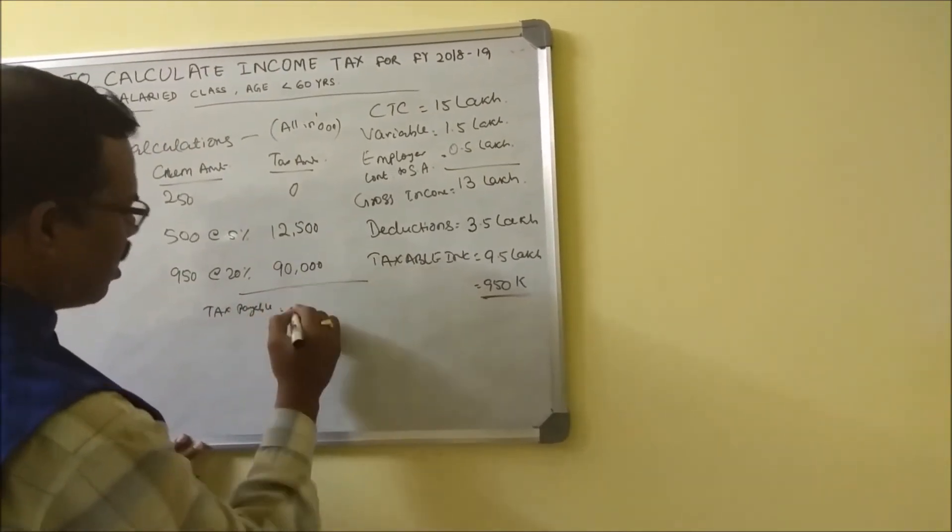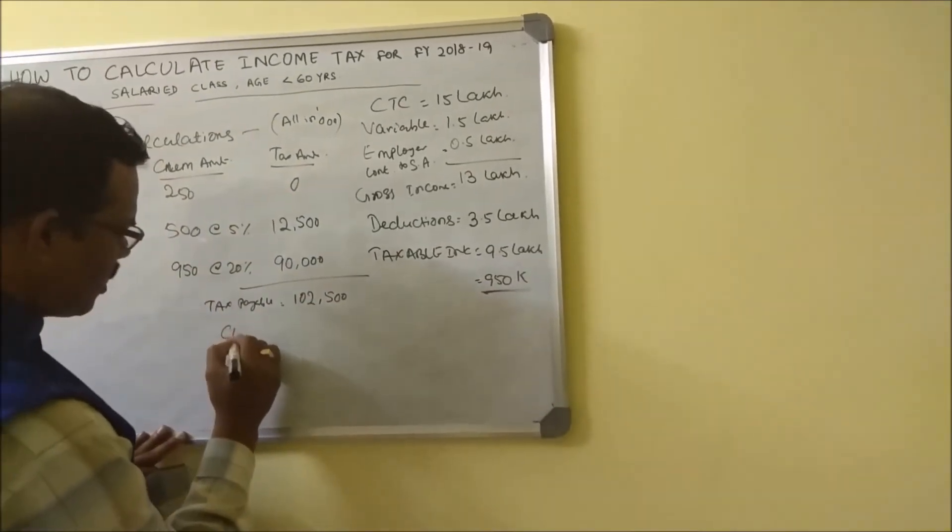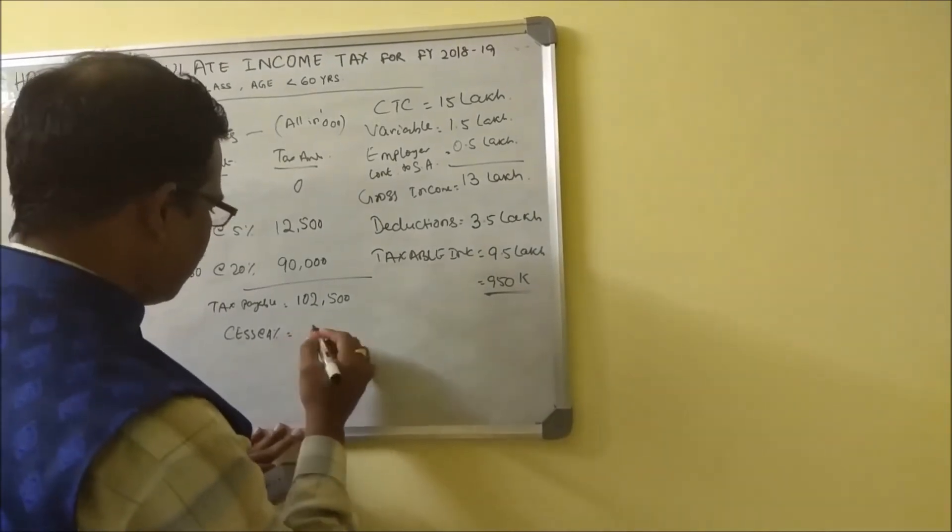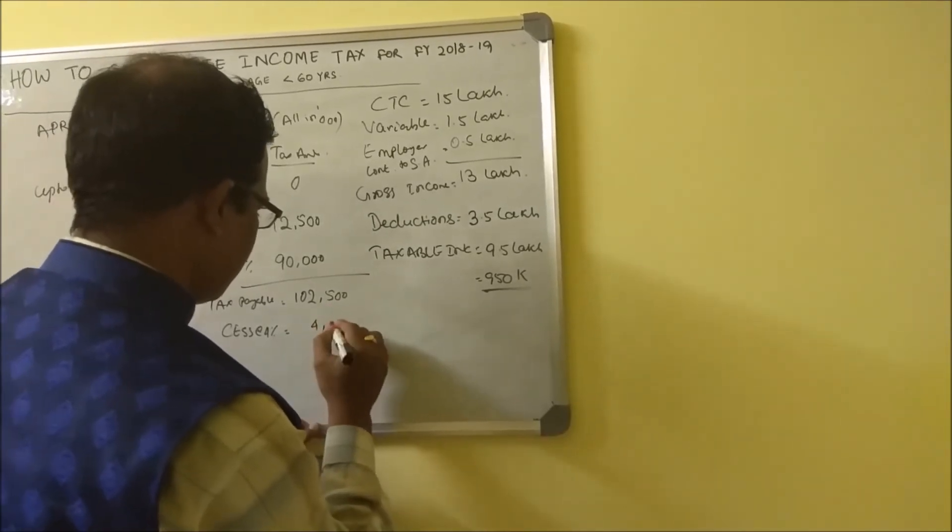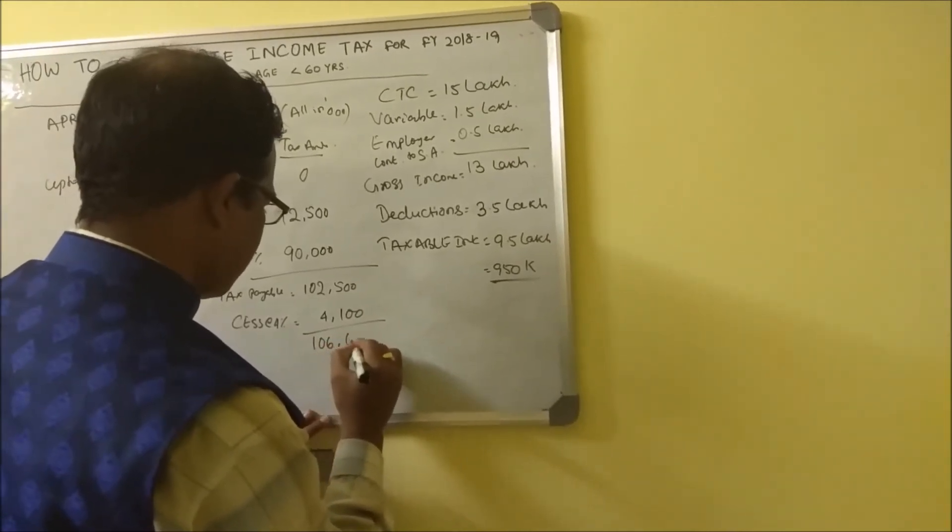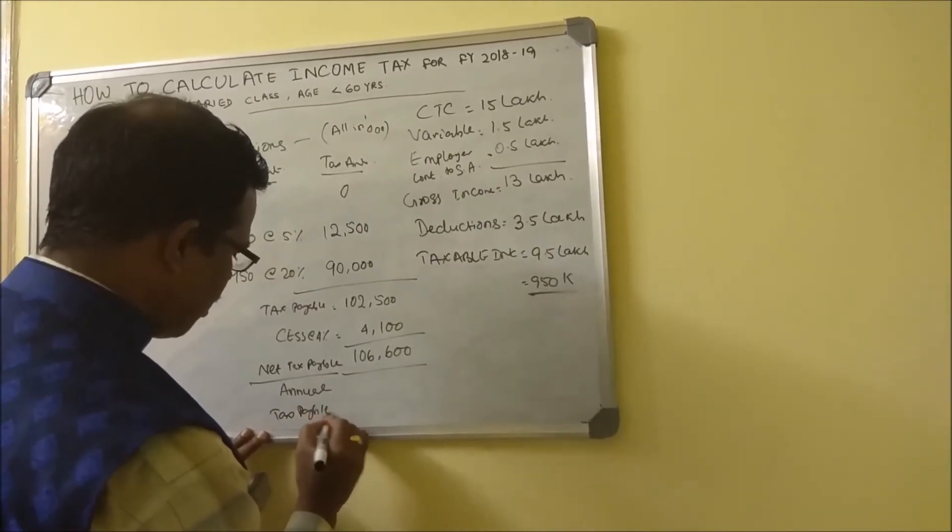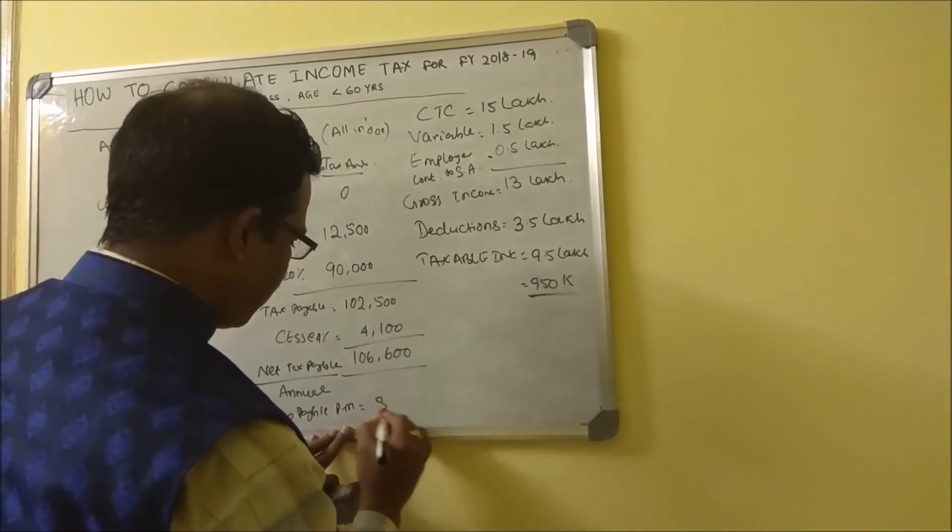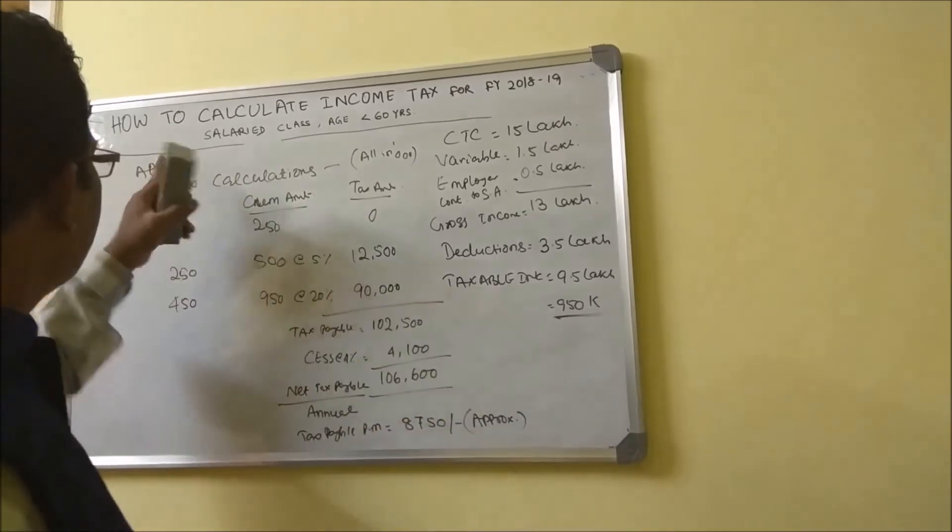Now you will calculate cess at 4 percent. Once you calculate cess at 4 percent, that will come to 4,100, so this is 106,600. This is your annual tax payable. Tax payable per month is equal to approximately 8,750. This is how you will go on paying from the third month onwards.